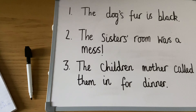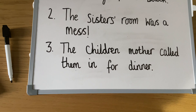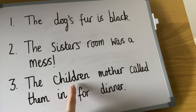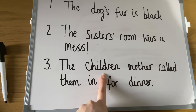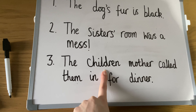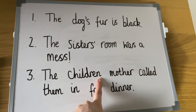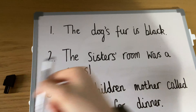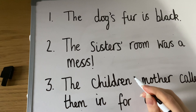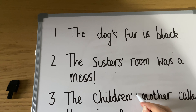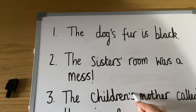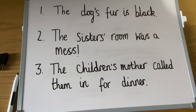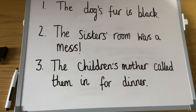However, not all plural noun sentences behave like this. A sentence might read: the children mother called them in for dinner. The word 'children' is a plural noun because there is more than one child, but it doesn't end with an s. So in this case, we would add an apostrophe and s to show that the children's mother is calling to multiple people.